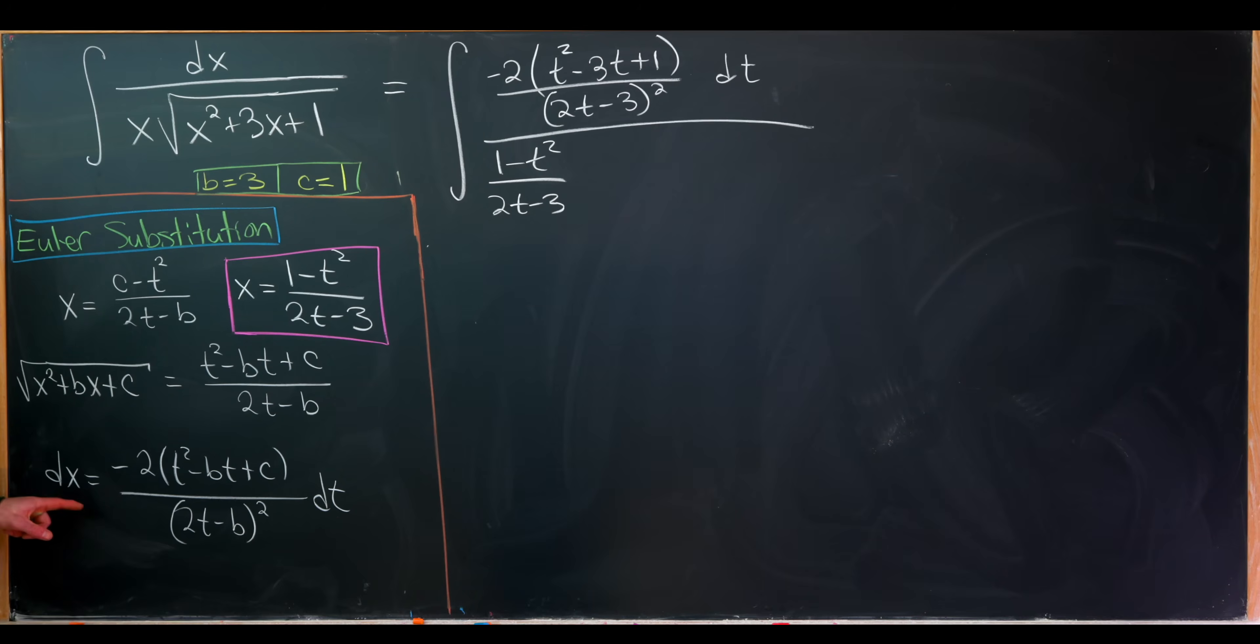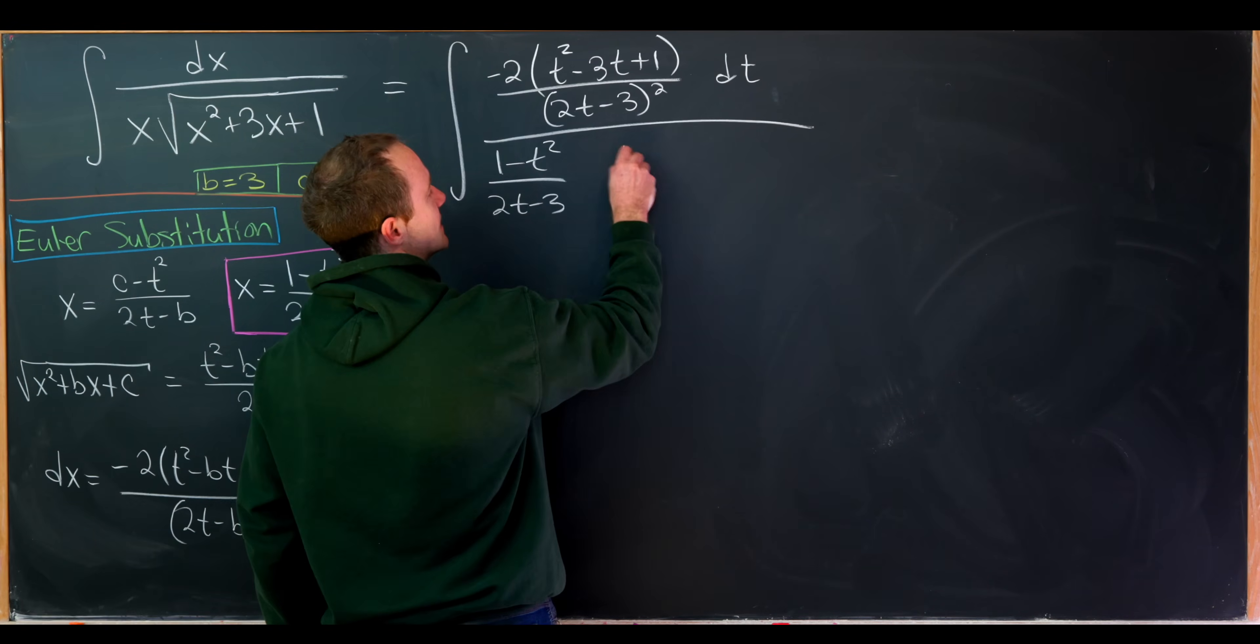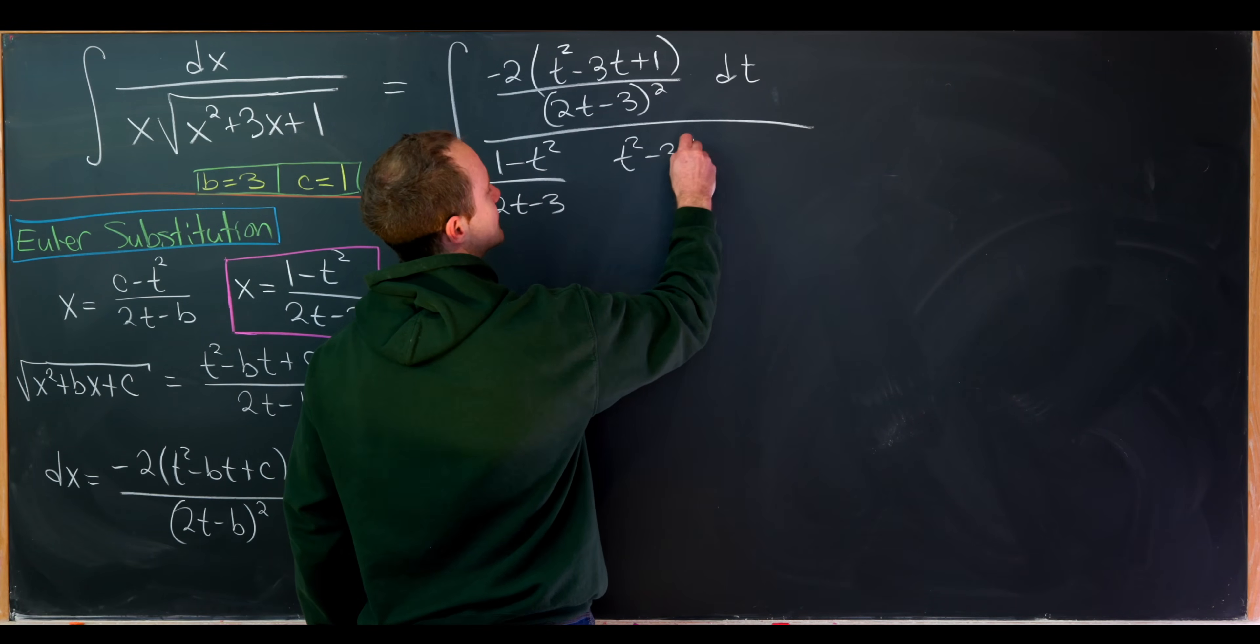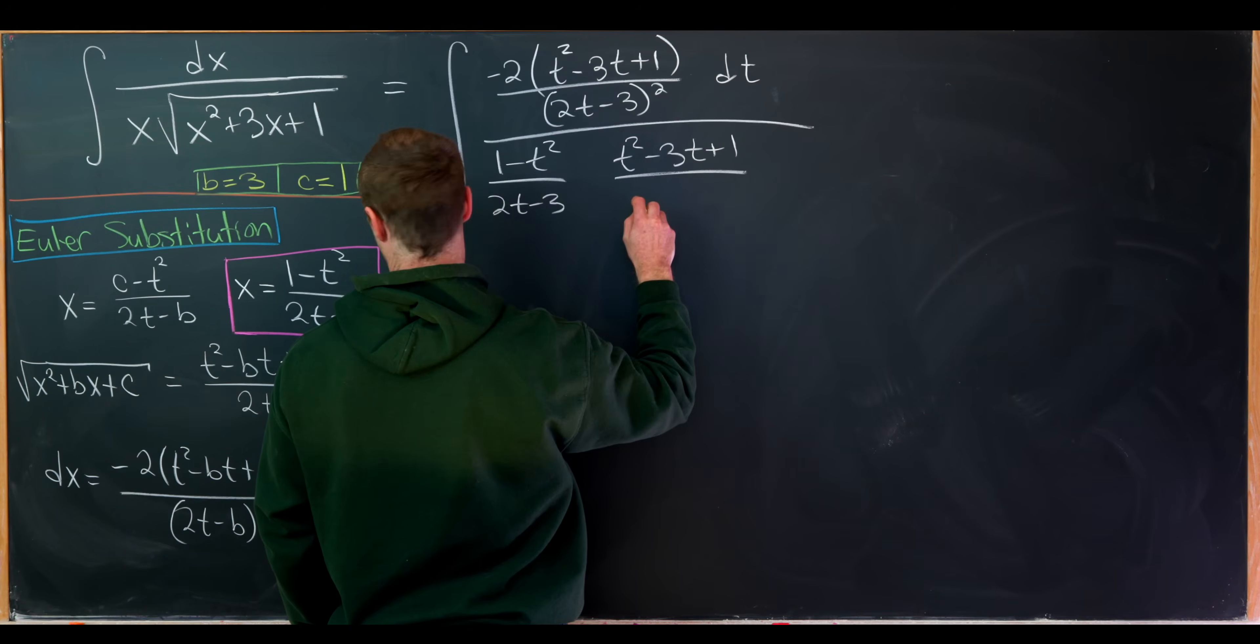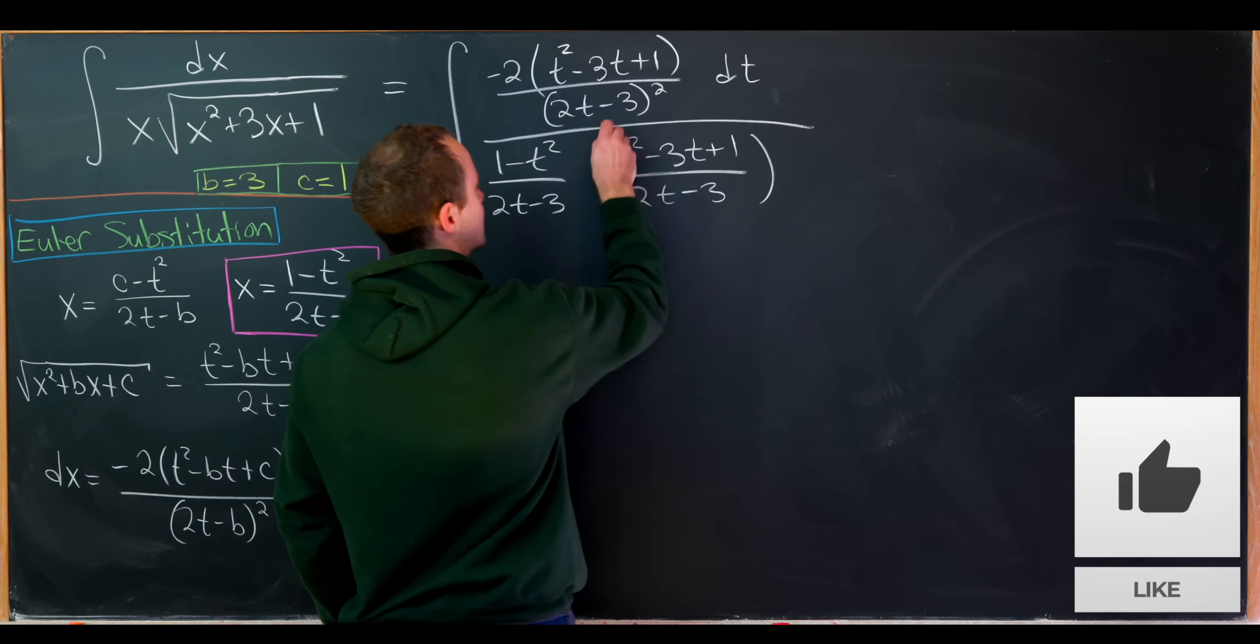Now let's take care of the x term. So that'll be 1 over t squared over 2t minus 3. Okay, and then let's take care of the square root term. So the square root term has this form. So that's going to be t squared minus 3t plus 1 and all over 2t minus 3.